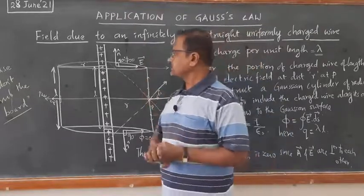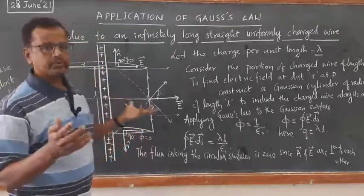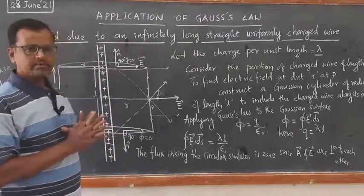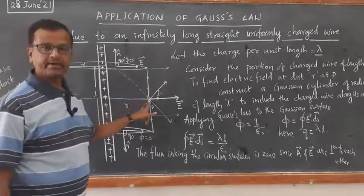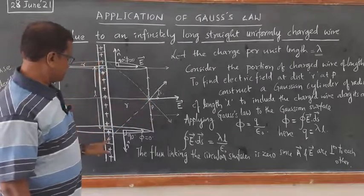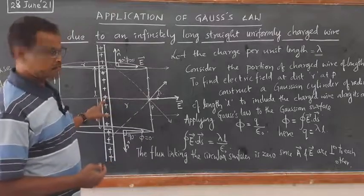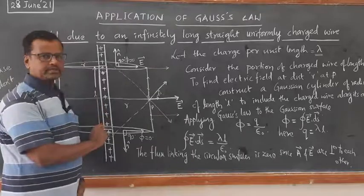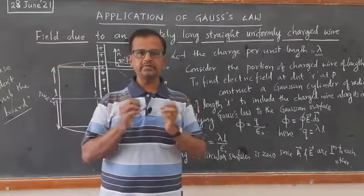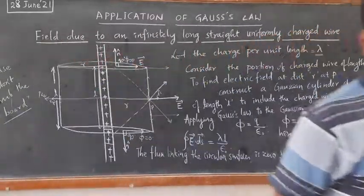I want to find out the electric field due to this. By the usual method, we need to consider the elementary portions of the charged wire. If I want to find the electric field at point P, the charges present here can be considered as point charges. The electric field at this point due to a particular point charge at distance r will be radially outwards. A point charge always exerts an electric field radially outward.